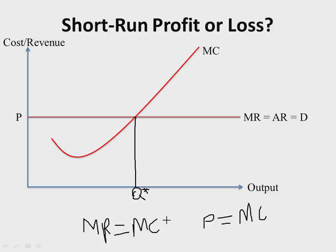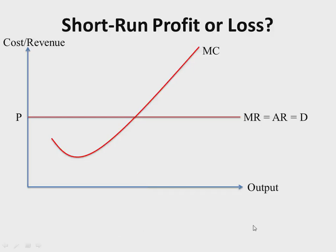A firm under perfectly competitive situations will produce at a point where marginal revenue equals marginal cost. Q* is the level of output produced for a firm under perfectly competitive situations. With this we are able to analyze the profit or loss situations under perfectly competitive markets — what we've displayed is the equilibrium condition, and from this we will display the profit or loss situations in the short run.